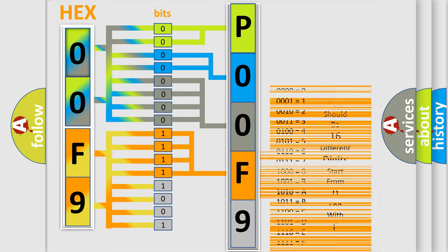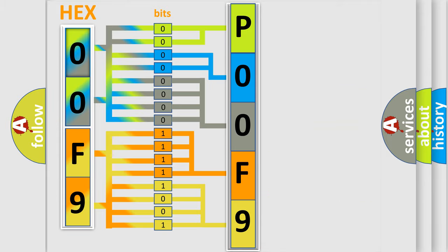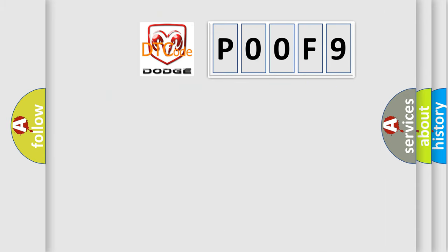A single byte conceals 256 possible combinations. We now know in what way the diagnostic tool translates the received information into a more comprehensible format. The number itself does not make sense to us if we cannot assign information about what it actually expresses. So, what does the diagnostic trouble code P00F9 interpret specifically for Dodge car manufacturers?